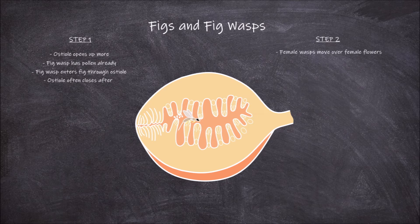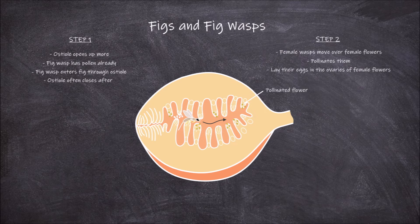The second step involves these female wasps moving over some of the female flowers, pollinating them. They do this as a byproduct of moving over the female flowers to lay their own eggs in the ovaries of some of these female flowers.